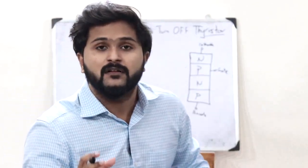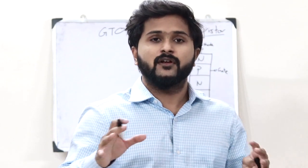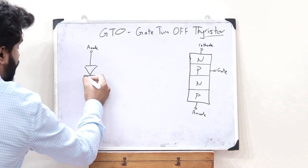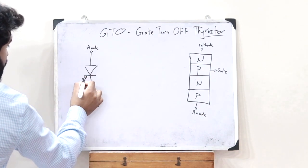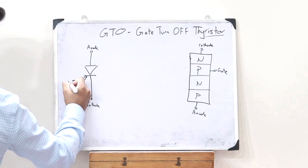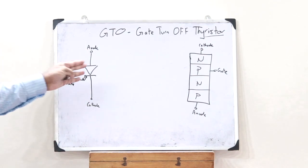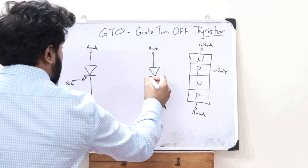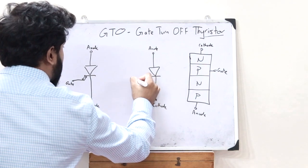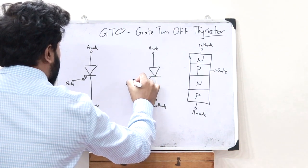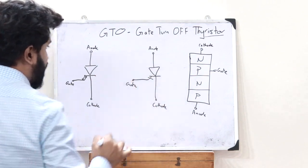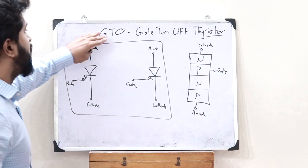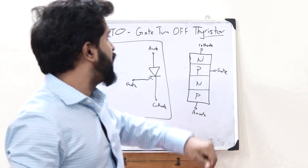The following are the symbols given for a Gate Turn Off Thyristor. The first symbol has two arrows where this is the gate. The second symbol has just one line going towards the gate with a slash. So these are the symbols given for a GTO or Gate Turn Off Thyristor.